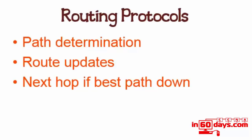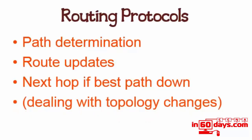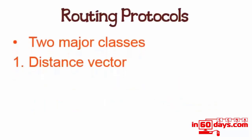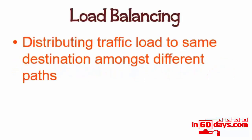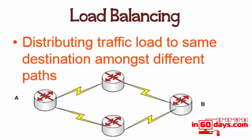Depending on the protocol, can it store another route? Does it have a topology table? And how does it deal with topology changes - if a certain part of the network becomes unavailable, can it find another way to get there? Two major classes you need to be aware of are distance vector and link state, and the different way both work. Convergence is when all routers agree on the topology of the network - all routing tables should agree on what the network looks like and how to reach all the various parts of it. Load balancing is basically distributing traffic load to the same destination but taking different paths.